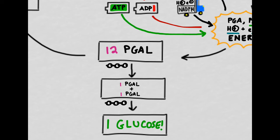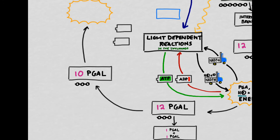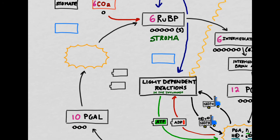The answer is that we reinvest the remaining PGAL in order to keep the cycle turning. So here are my 10 PGAL, and I'm going to have to rearrange them in order to reinvest them in the cycle, and somehow transform them back into RUBP.